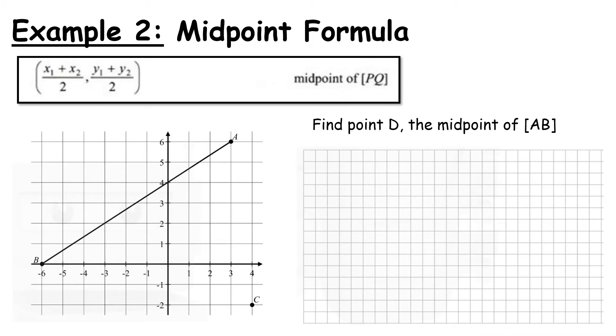So now let's take a look at example 2, which is the midpoint formula. So find point D, which is the midpoint of the line segment AB. Remember those square brackets mean the line segment of AB. The formula we have on page 18 is the midpoint of PQ. We're going to first of all, like the last example, write down our points.